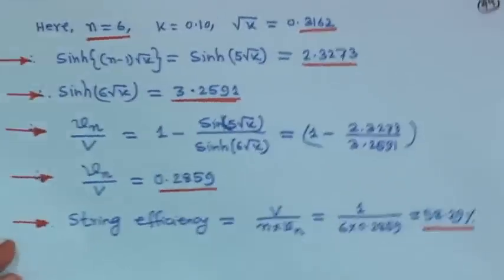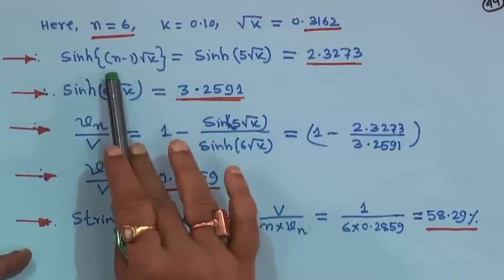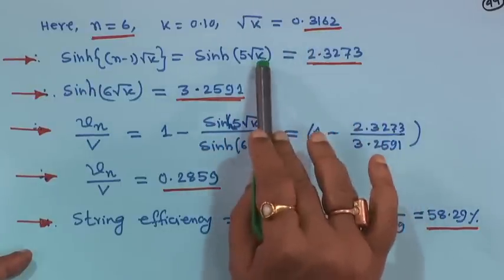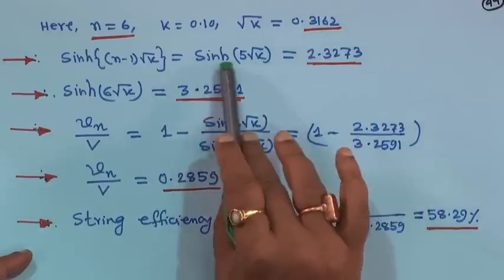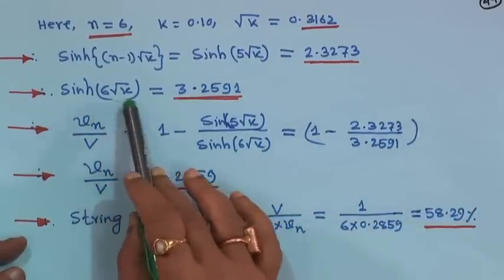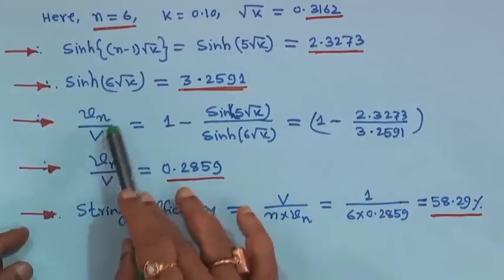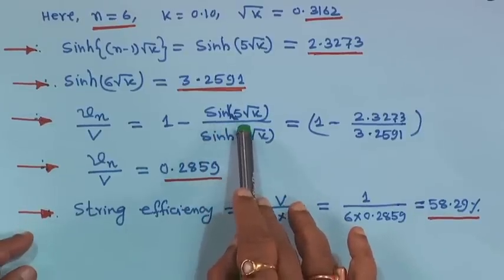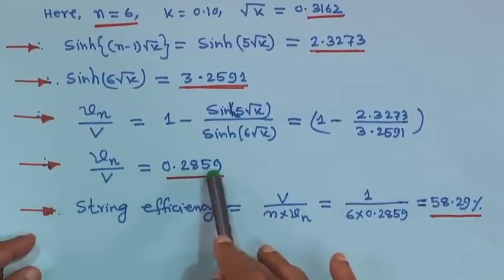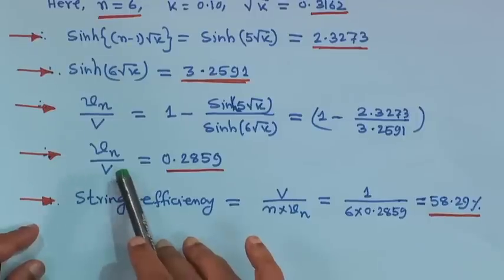It is given that n equals 6 and k equals 0.1, so √k is 0.3162. Therefore, sinh((n−1)√k) equals sinh(5√k). With √k equal to 0.3162, multiply 5 by this and take sinh — it becomes 2.3273. And sinh(6√k) when n equals 6 becomes 3.2591. Therefore, V_n/V equals 1 minus sinh(5√k) divided by sinh(6√k). Substituting all values gives V_n/V equal to 0.2859, where V_n is the voltage across the last insulator nearest to the conductor.